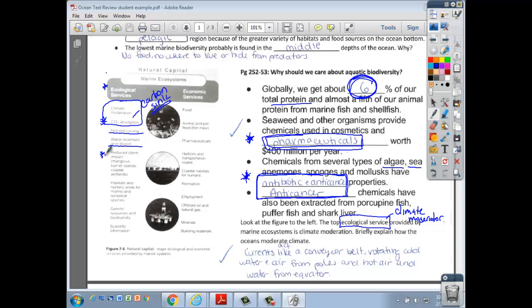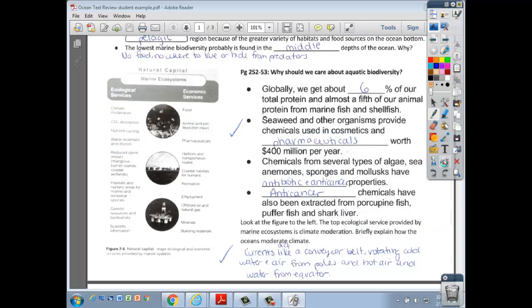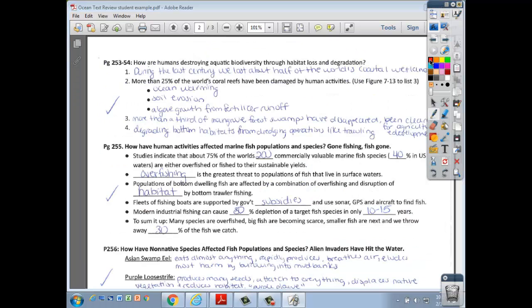This is a big one. Oceans and coastal areas help reduce storm impact, particularly those mangrove forests that grow along the coast and coastal wetlands. So there's some important ecological services and economic services. We talked a lot about the food, the pharmaceuticals, recreation, harbor and transportation routes, offshore oil and natural gas, and it creates jobs. So the ocean not only provides ecological services, but economic services as well.